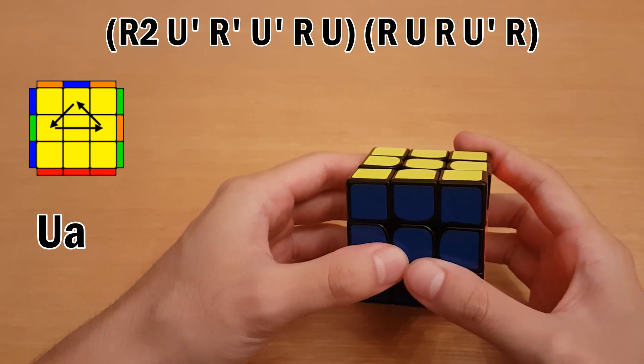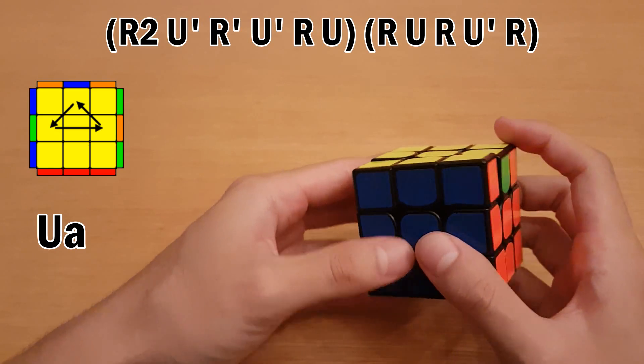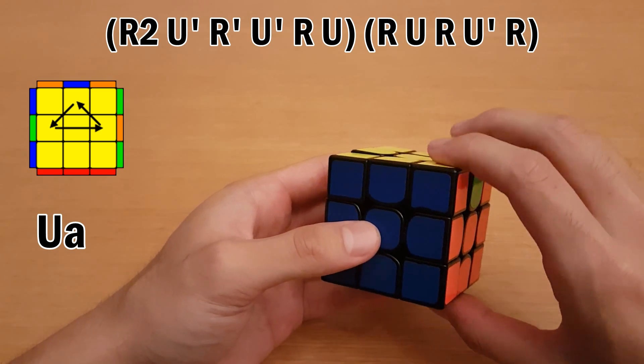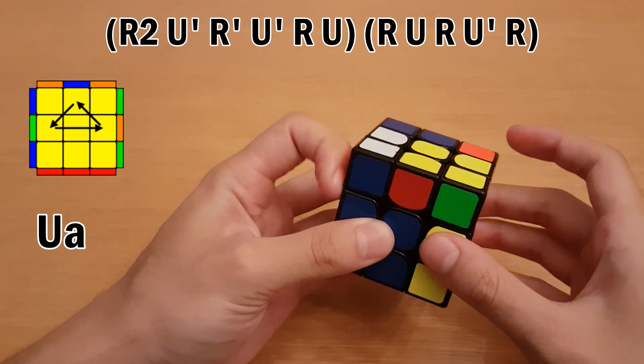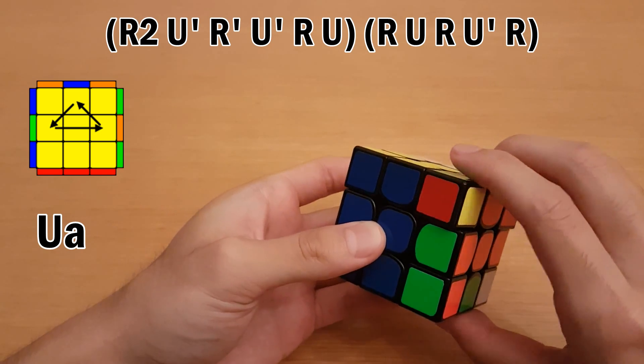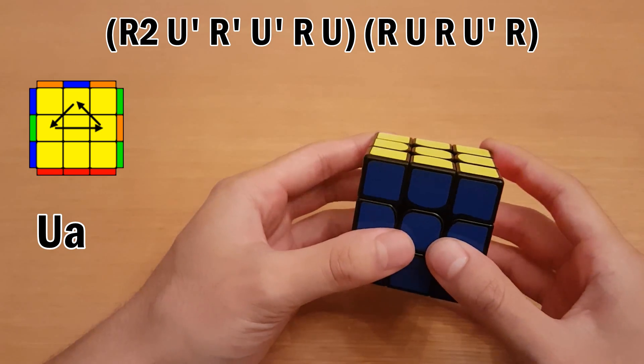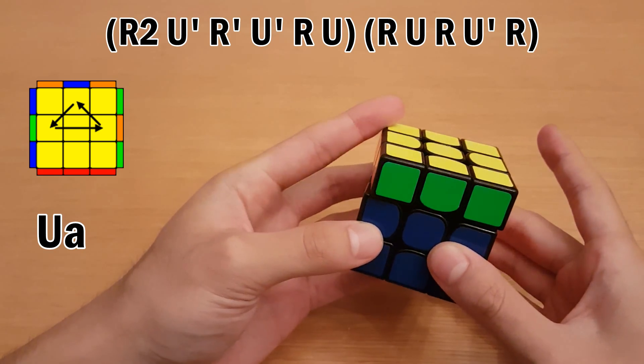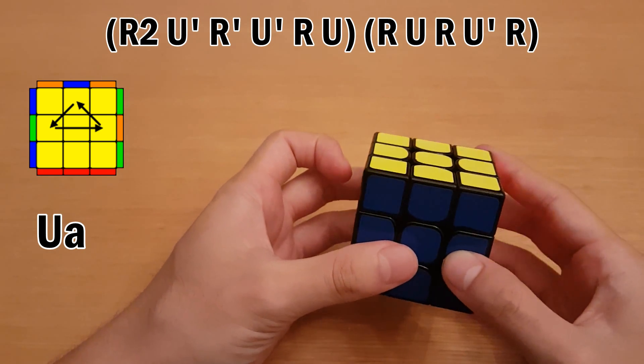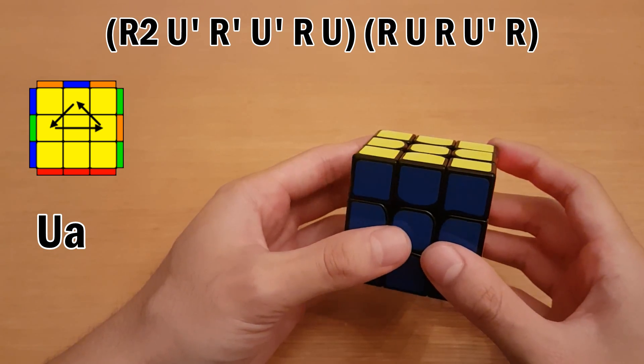Now we have the U-a permutation again, but this time the block is at the front. And how you can do it is like this. Again, it's important to be able to do this move, which you can also do as this, just like before, as long as you're doing it with your left hand. So now again, faster.